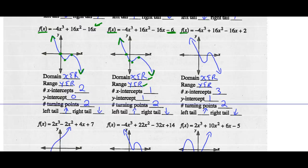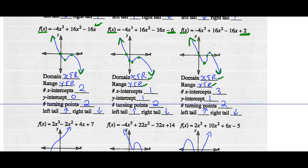Changing the constant term to positive 2: domain and range are still any real number. Now there are three x-intercepts. There's still only one y-intercept, now at positive 2. There are still two turning points, and the left tail goes up while the right tail goes down.